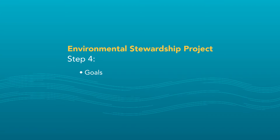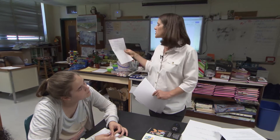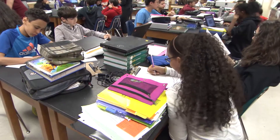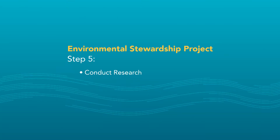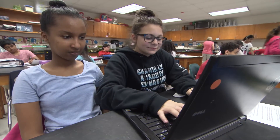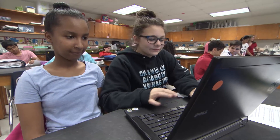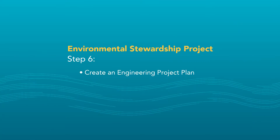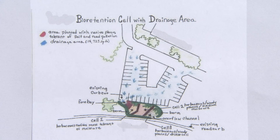In step four, we set our goals by creating a list of tasks and a timeline — outlining what we want to accomplish, when we want to accomplish it, and who's responsible for each step. We organized our materials and made a budget. In step five, we researched how a bioretention cell works, how much it costs, and what permits we needed. In step six, we created our specific plan with a diagram to follow when making our bioretention cell.